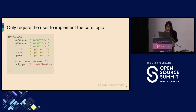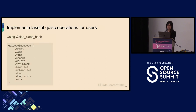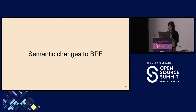In QDisc ops, there are many different function pointers. To make it easy for users, we only require them to implement enqueue and dequeue. The id is just a string to represent this QDisc. We make init, reset, and pick functions optional, which simplifies development since you only need to implement the core logic. We also make the classical QDisc operations predefined, implementing them using QDisc class hash, so users don't need to implement those again. To make it easy to use, we made three changes to BPF.